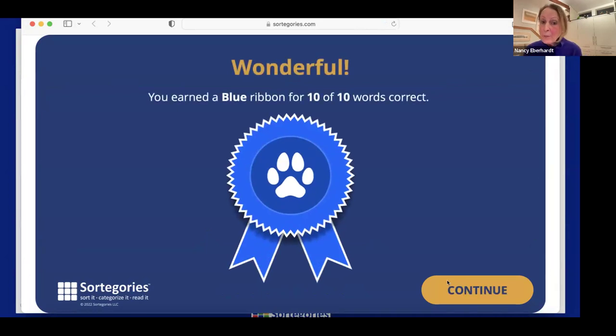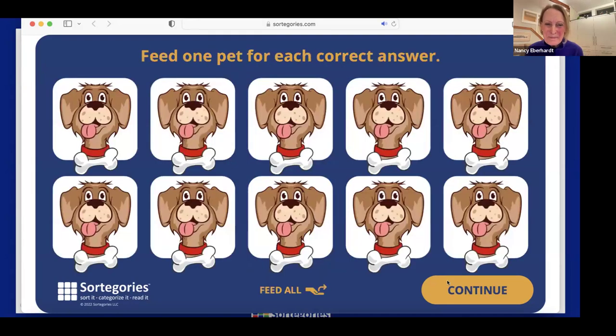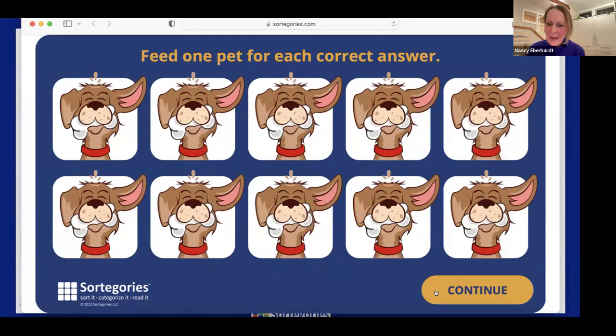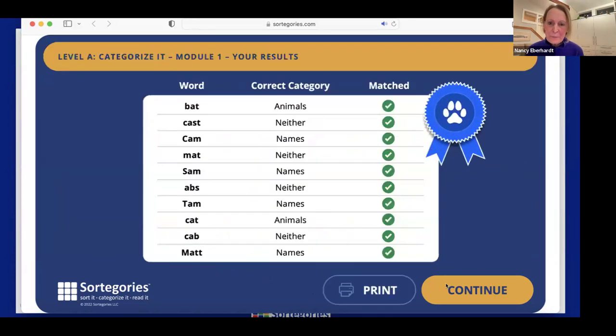Wonderful. You earned a ribbon. And ribbons are awarded for mastery level performance 10, 9, or down to 80 percent. Click a pet to feed it. When you are done, click continue. Now, if there's a connection between attention to task and engagement, we think that getting to feed the animals builds that engagement factor. So we can either feed one dog at a time or in the interest of time, all of them. And then last but not least.